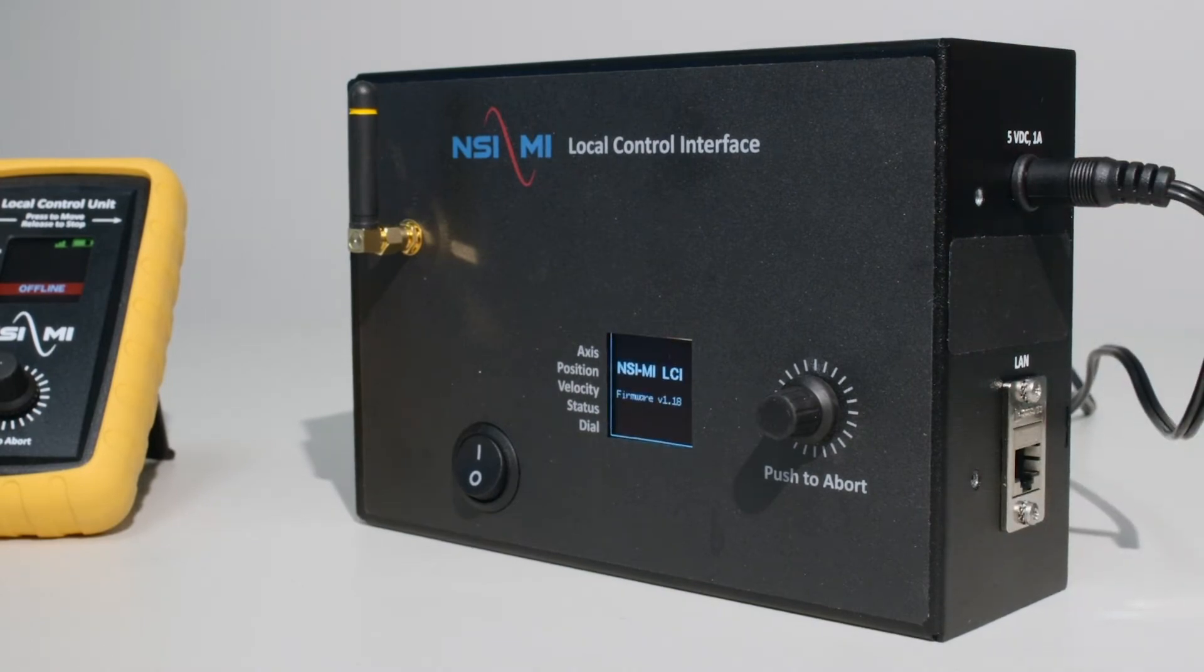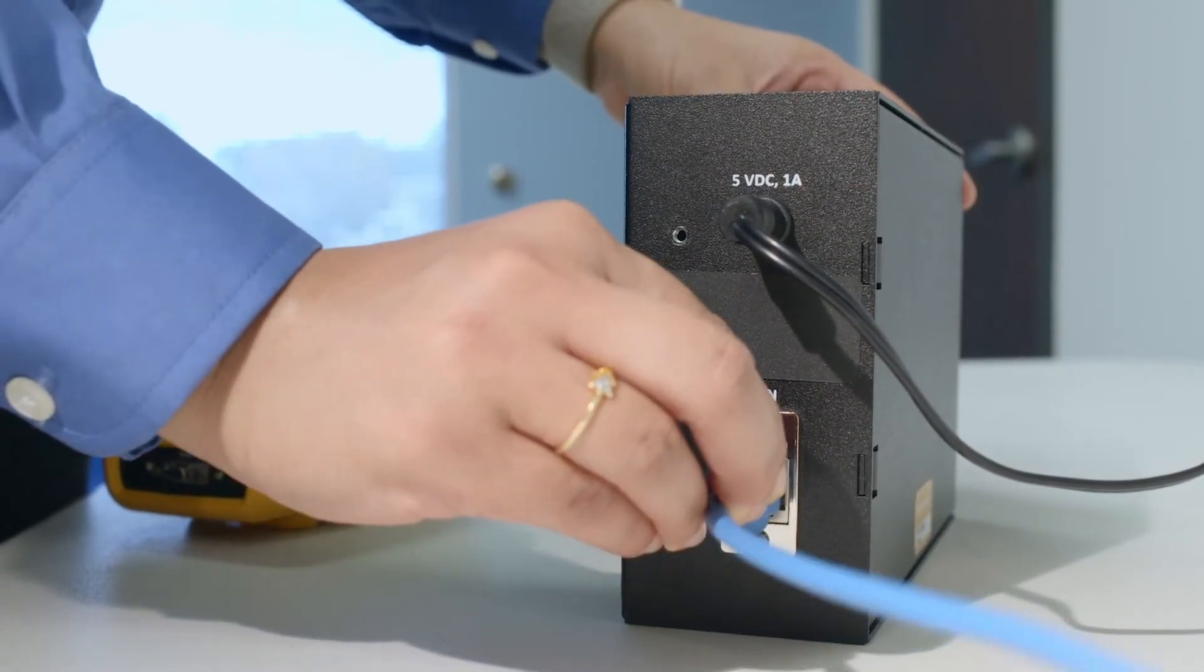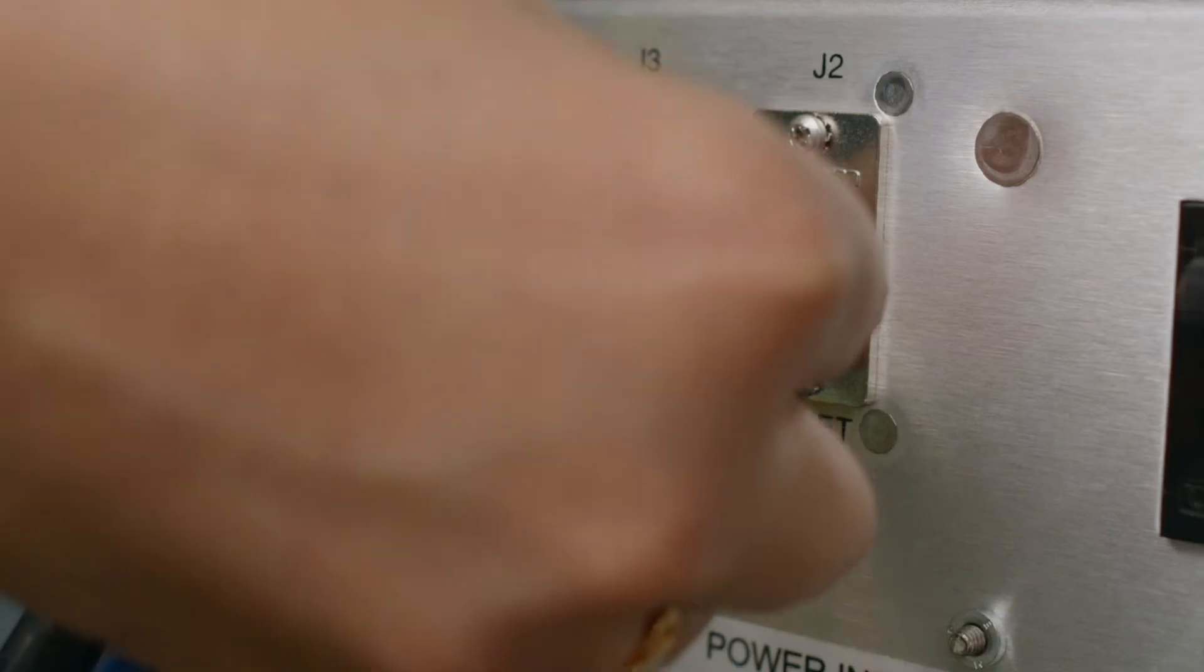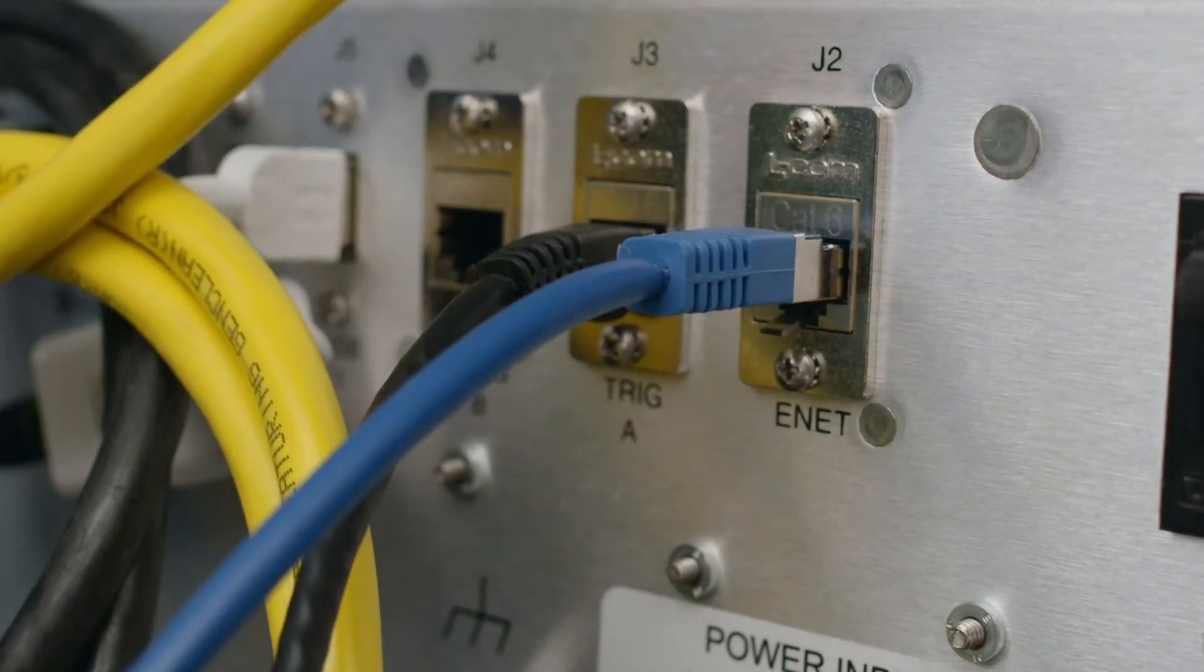The LAN port of the LCI is used for its programming interface. It is connected to the position controller using an Ethernet switch. Now let's see how to use the LCU with the position controller.